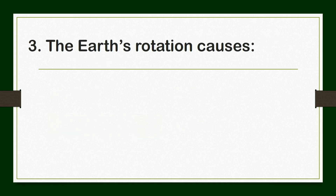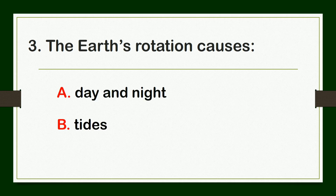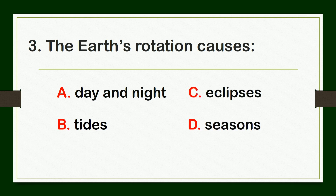Number three: The Earth's rotation causes — A. day and night, B. tides, C. eclipses, or D. seasons.